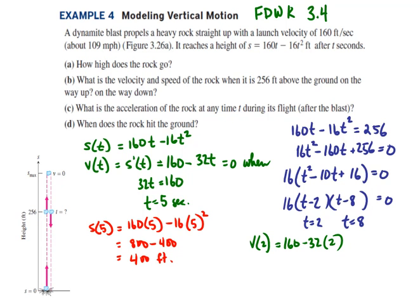At t equals 2, the velocity would be 160 minus 32t, or 160 minus 64, and so that would be 96 feet per second. It started off at 160 feet per second, and now it's slowing down. By the time it reaches 256 feet, it's at 96 feet per second. At time t equals 8, the velocity is 160 minus 32 times 8, and so that would be negative 96 feet per second.